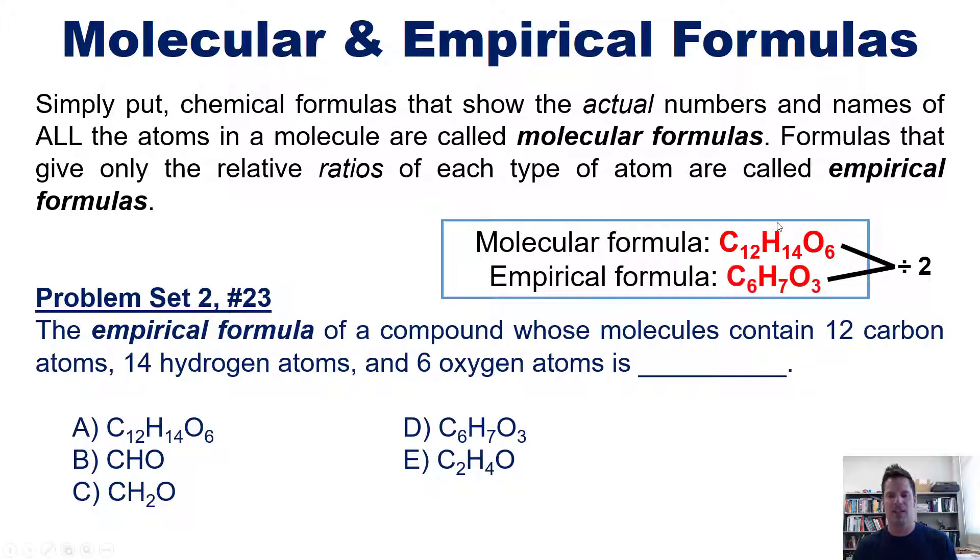In this case, you can see that each of these is divisible by two. So if I took each subscript number and divided it by two, I would get this formula, C6H7O3. Now these numbers cannot be divisible by anything to come down to a smaller whole number ratio. This is the empirical formula for this molecule, which lines up with answer D.